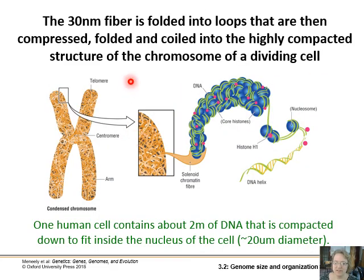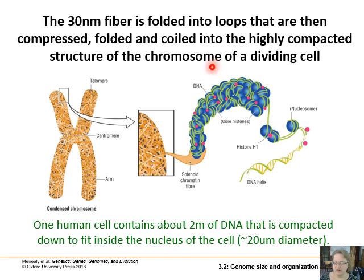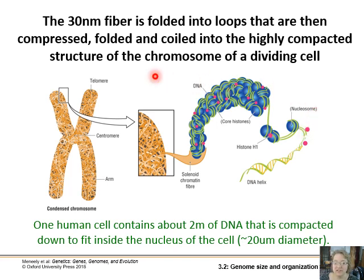When you get that thick 30 nanometer fiber of chromatin, it then gets looped into an even tighter package — and that's what we see during cell division when the chromosomes condense. One human cell contains about two meters of DNA that's folded down to fit inside the nucleus. So the DNA gets really, really tightly packed. Is there a lot of gene transcription going on during cell division? The answer is no — the DNA is not available for transcription; it's all packed up tight.